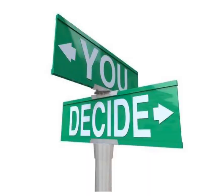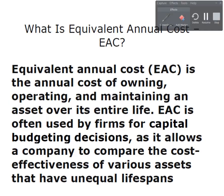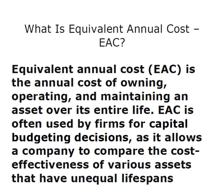Hey ladies and gentlemen, it's Professor Williams and today we're gonna look at a capital budgeting tool called EAC, or Equivalent Annual Cost. EAC is the annual cost of owning, operating, and maintaining an asset over its entire life. Firms use this for capital budgeting because it allows a company to compare the cost effectiveness of various assets when those assets have an unequal lifespan.